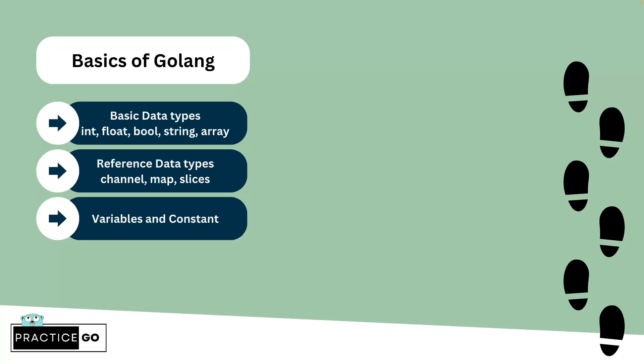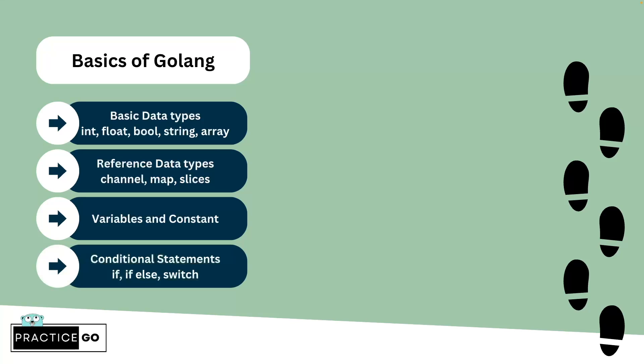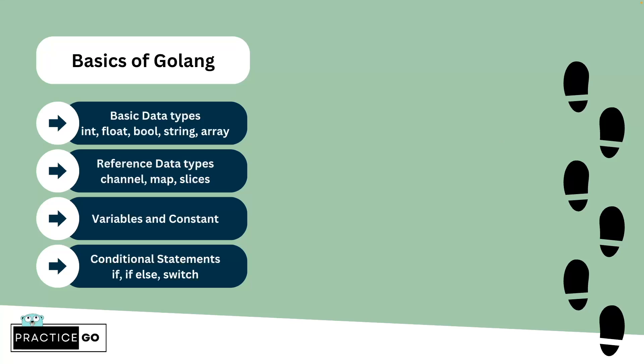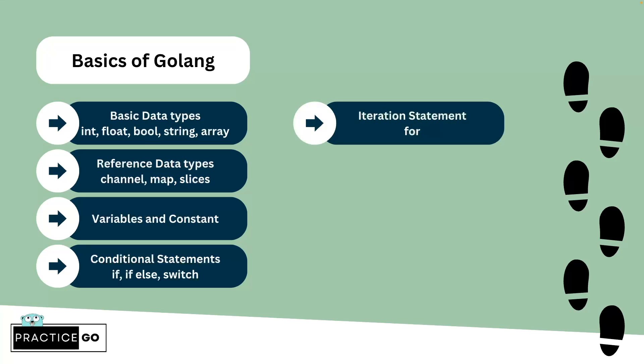Learn about variables and constants — how to declare a variable, how to declare a constant. Then conditional statements: if, if-else, and switch are available in Golang. For iteration, you have only for — there is no while or do-while. Only for is available, and it comes with very flexible iteration capabilities.